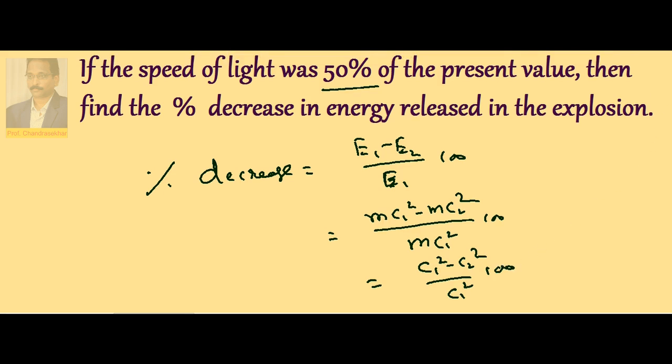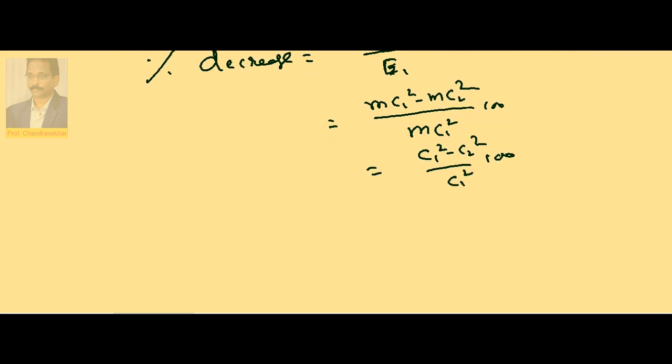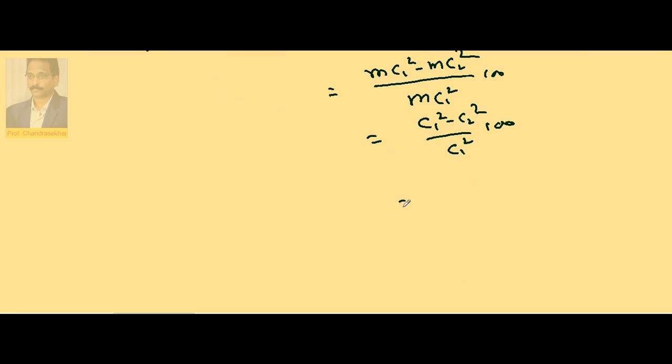Now, according to the data, velocity becomes 50% of the present value. If I take initial as c, finally c by 2.